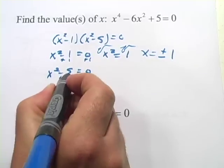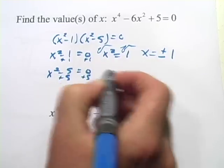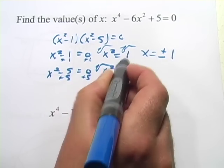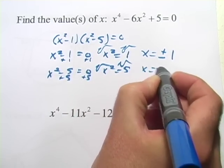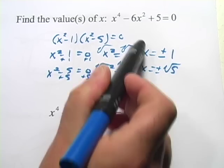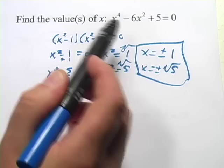we do the same thing. Add 5. Take the square root, and we get x equals positive or negative square root of 5. And those are the four answers for values of x here.